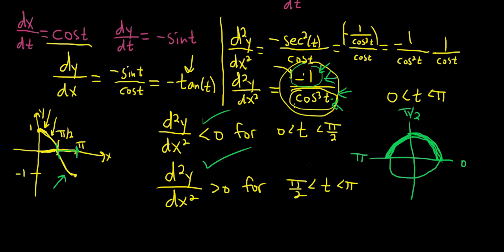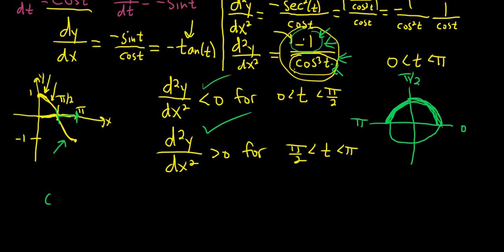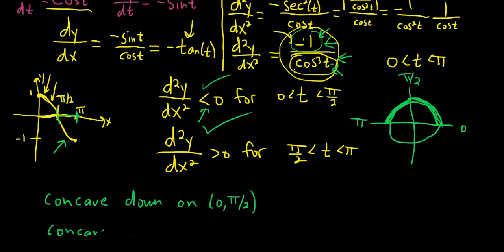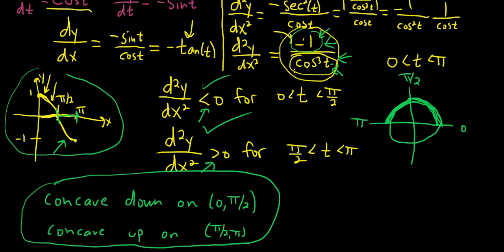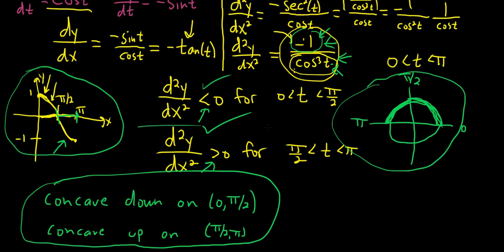Both methods agree. The second derivative is less than 0 — concave down — on the interval (0, π/2). It's greater than 0 — concave up — on the interval (π/2, π). This is the final answer. It's a nice problem because you can reason through it using either the graph of cosine or the unit circle, and it's worth understanding both approaches.